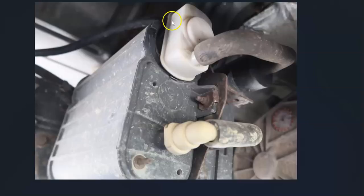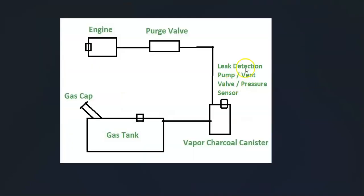Sometimes the components are separate and located differently, but it is very common for them to be inside one package, and quite often they're located on the charcoal canister. Then a hose leaves the charcoal canister and goes up to the top of the engine to what's called a purge valve. The purge valve basically opens when the engine's running so the gas vapors can go in and get burnt off, then closes when the engine's not running so they don't escape.